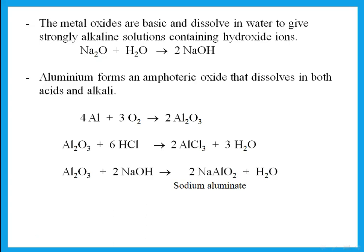Some metals form amphoteric oxides. Which metals form amphoteric oxides? Aluminium, lead, and zinc. Amphoteric means the oxide reacts with both acids and bases to form salt and water. For example, aluminium oxide reacts with HCl — acting as a base — to form aluminium chloride plus water. It also reacts with a base like sodium hydroxide — acting as an acid — to form sodium aluminate, NaAlO₂, plus water.